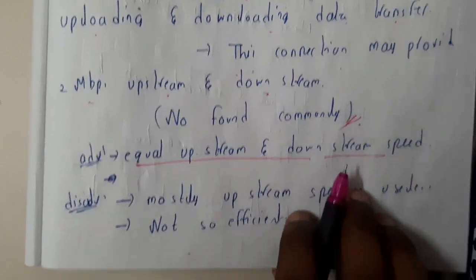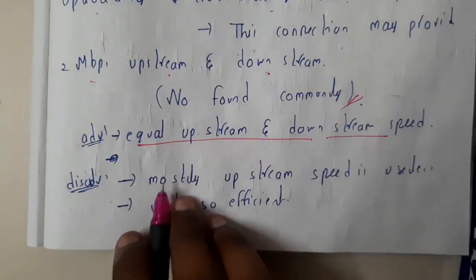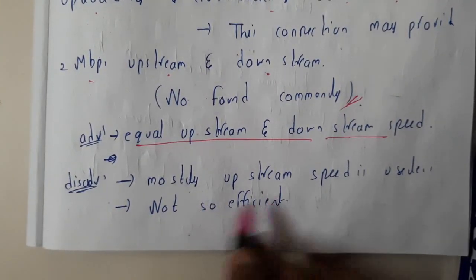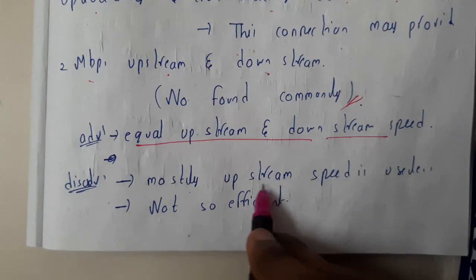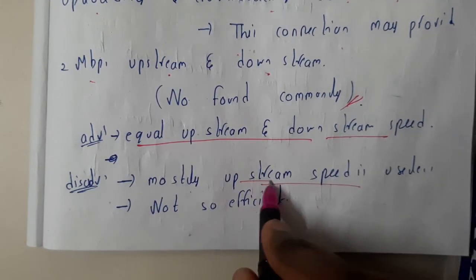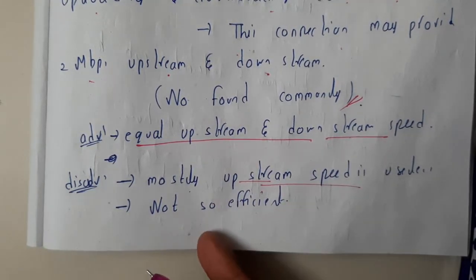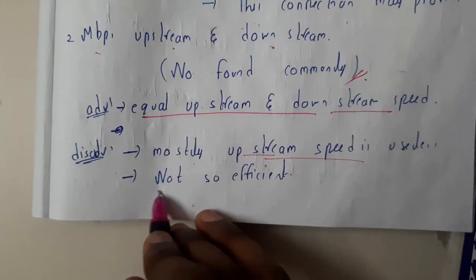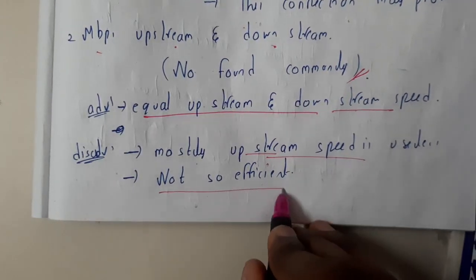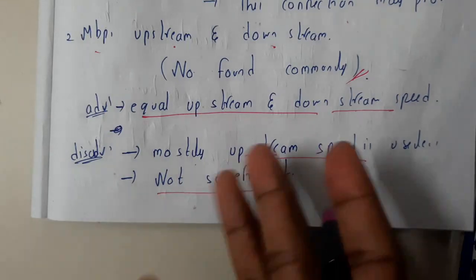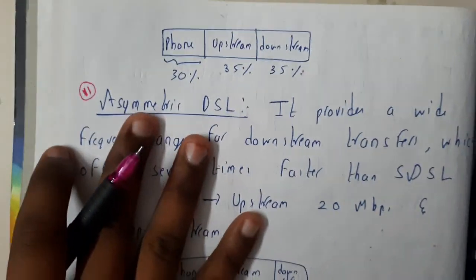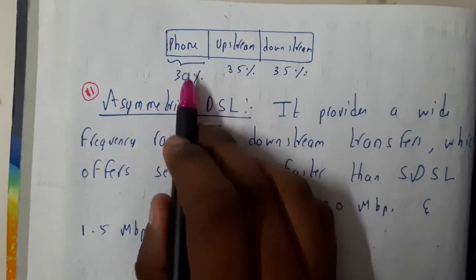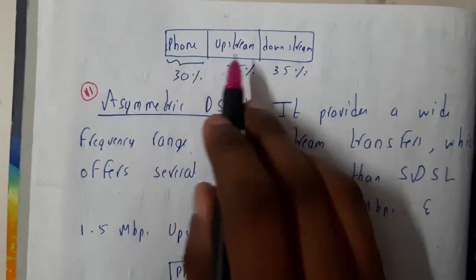The advantage here is we have equal download and upload speeds. But the disadvantage is that most of us have no use for this upstream — we will not be uploading most things. It is not so efficient because we are not having any upload requirement but we are allocating bandwidth for upload speed, which will be wasted.